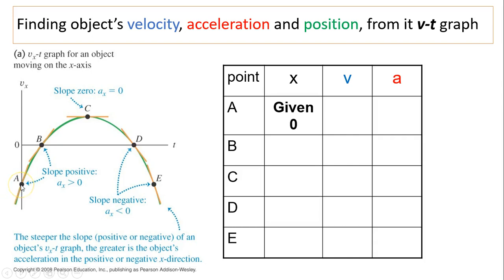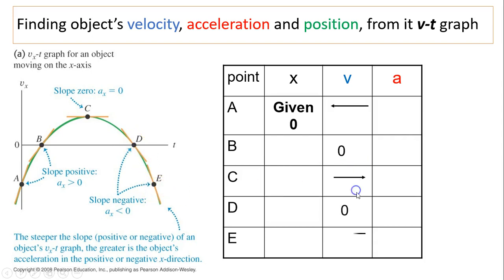For instance, at point A, V is negative. At B, V is zero. At C, V is positive. At D, V equals zero. At E, V is negative. So we can figure that out right from the graph.